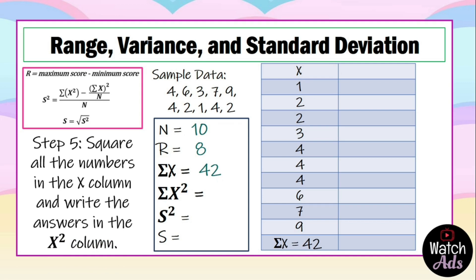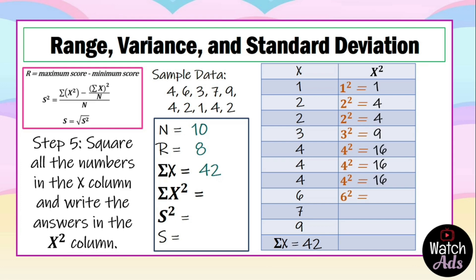Step 5: square all the numbers in the x column and write the answers in the x² column. Remember that squaring a number is simply multiplying it by itself. We write x² above aligned with x, then proceed: 1² = 1, 2² = 4, 3² = 9, 4² = 16, 6² = 36, 7² = 49, 9² = 81.